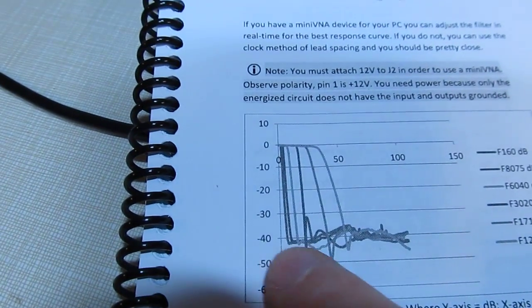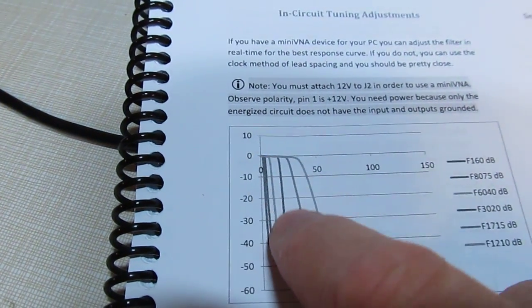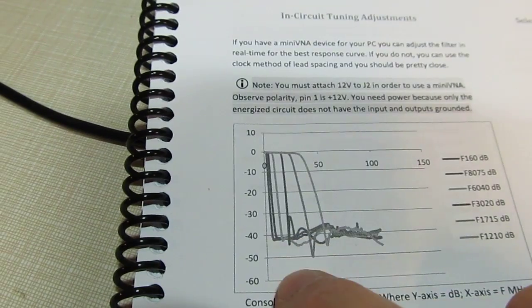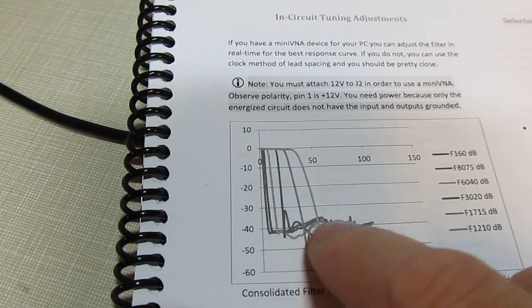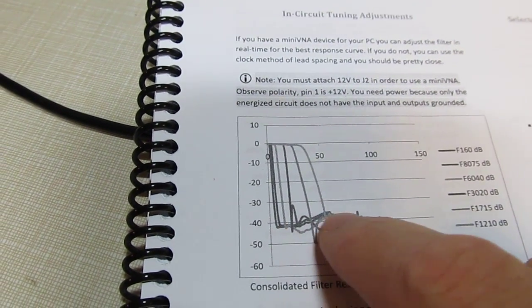These filters are supposed to have characteristics that look basically like this. Now of course these plots only go down to about 40 dB. My analyzer can show a little bit deeper so the characteristics are going to look a little bit different than that. So let's go take a look at them.